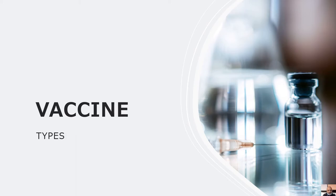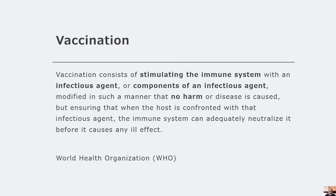We will first look at the different types of vaccines. According to the World Health Organization, vaccination consists of stimulating the immune system with an infectious agent or components of an infectious agent modified in such a manner that no harm or disease is caused, but ensuring that when the host is confronted with that infectious agent, the immune system can adequately neutralize it before it causes any ill effect. It's pertinent to note that the word 'no harm' relates to no morbidity and no mortality, or at least a limited morbidity.